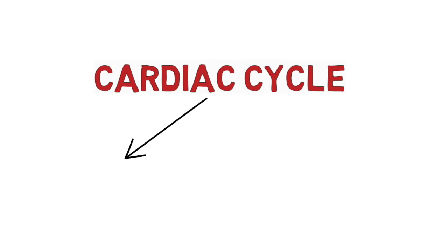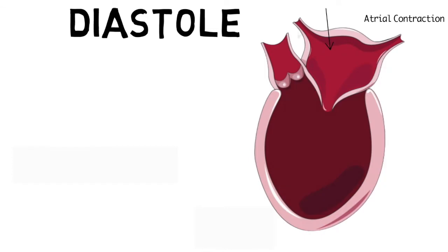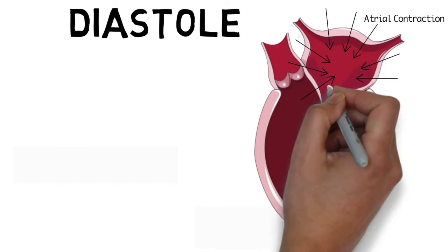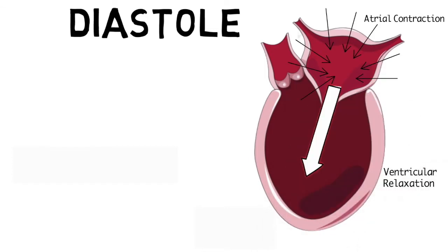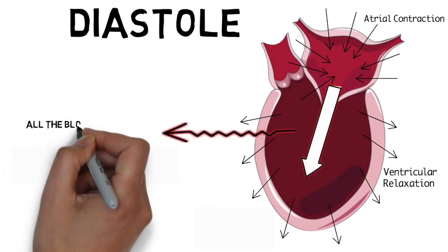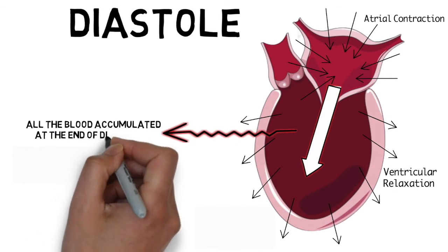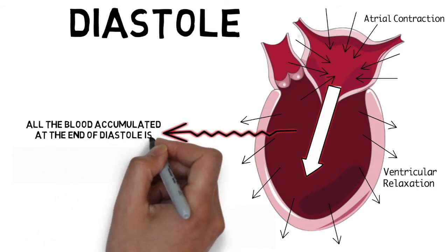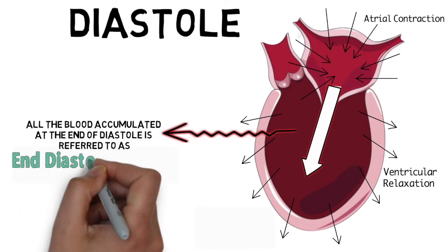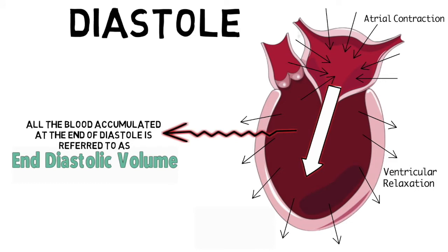The cardiac cycle is divided into two phases: diastolic and systolic. During diastole, the atrium contracts to push the blood into the ventricle, and the ventricle in return relaxes to accommodate all the volume coming in. At the end of diastole, all the blood that's accumulated in the ventricle is referred to as the end diastolic volume, and normally this ranges around 120 ml.